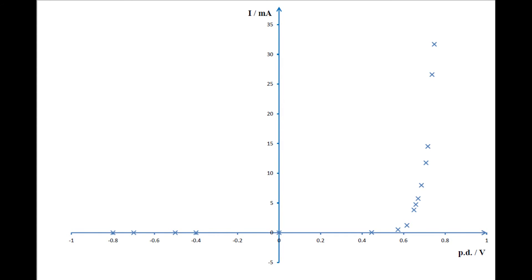And it takes quite a bit of potential difference to allow for any significant current to flow. But once the potential difference is about 0.7 volts, the current flows quite freely.